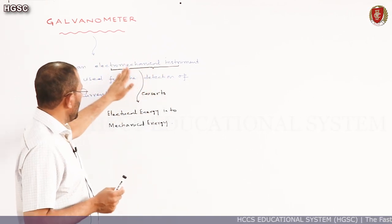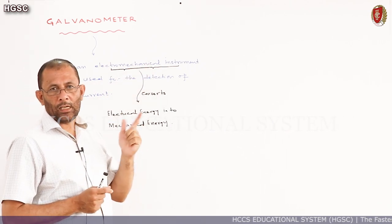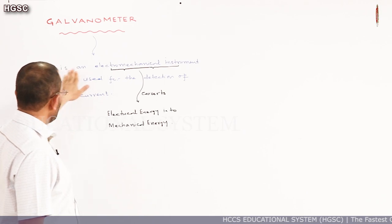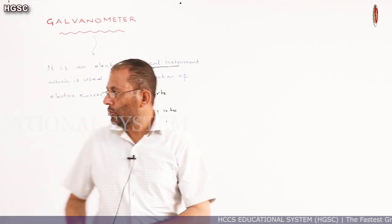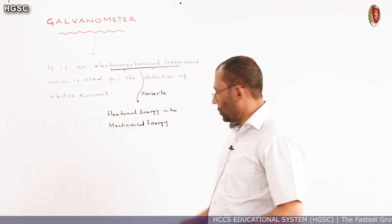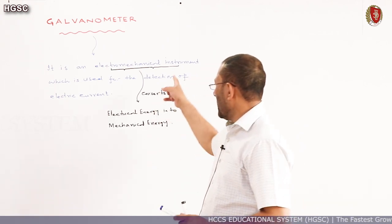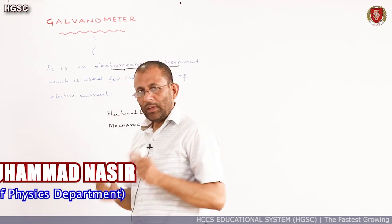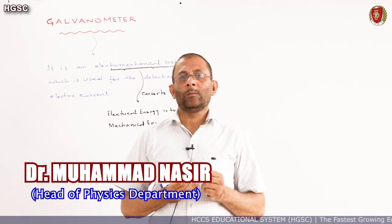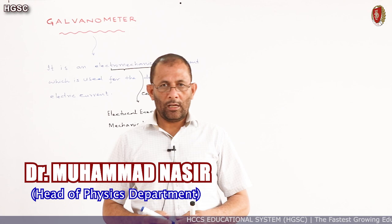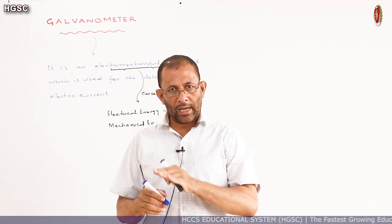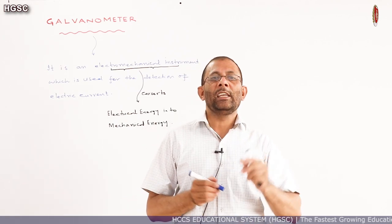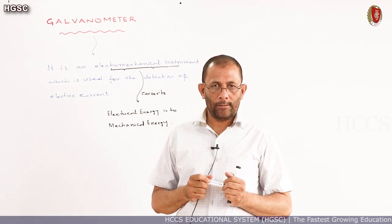Just as there are electromechanical devices, similarly the galvanometer is an electromechanical instrument which is used for the detection of electric current. Detection means we detect from it whether current is present in the circuit or not, whether current is flowing or not — we detect this with the galvanometer.